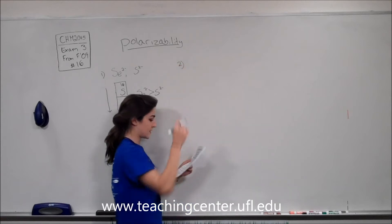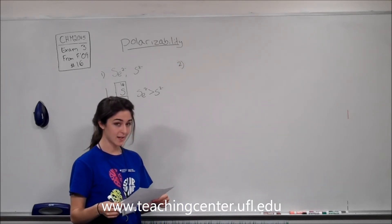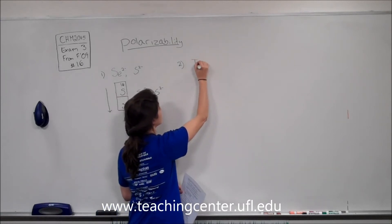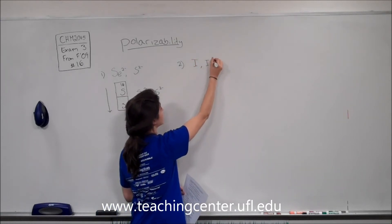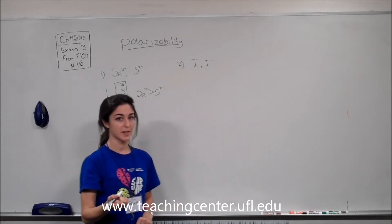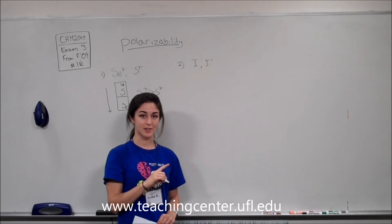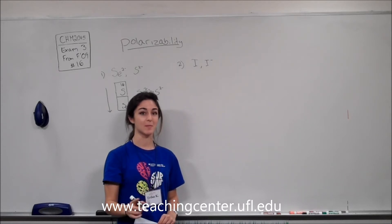Part 2 says we have the parent atom I and I-, so iodine and I-. Now we can't compare this on the table, but another trend we know about polarizability is that anions are going to be more polarizable than the parent atom.